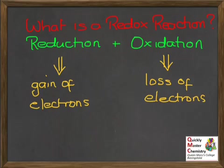We need both of these processes to make a reaction, because you can't have something gaining electrons unless something else is losing them. Electrons can't just appear from nowhere and they can't just disappear to nowhere — they're going to be transferred from one thing to the other. So these processes happen in partnership in a reaction.